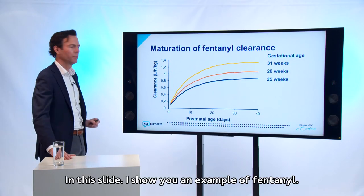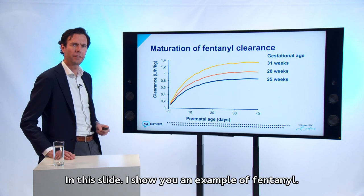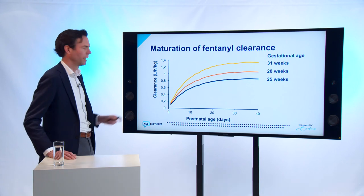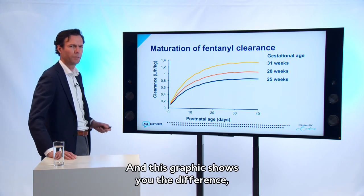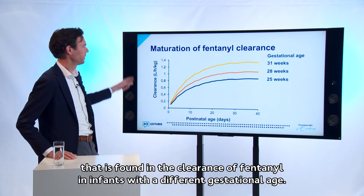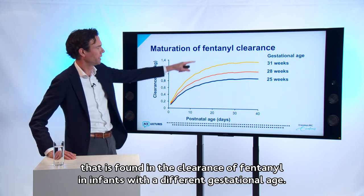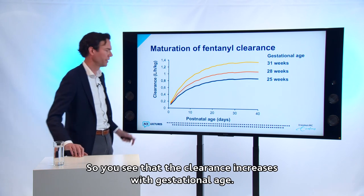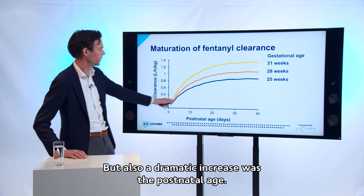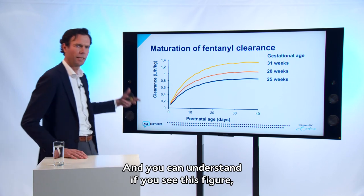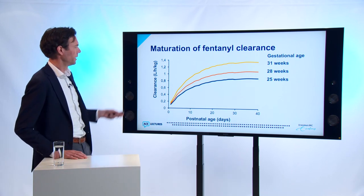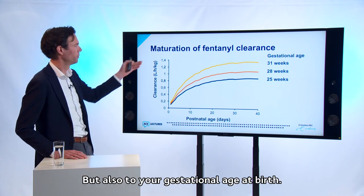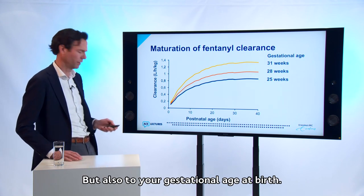An example is fentanyl, an opioid used for severe pain in infants. This graphic shows the clearance of fentanyl in infants with different gestational ages — clearance increases with gestational age and increases dramatically with postnatal age. You can understand from this figure that the dose of fentanyl needs to be adjusted according to postnatal age and gestational age at birth.